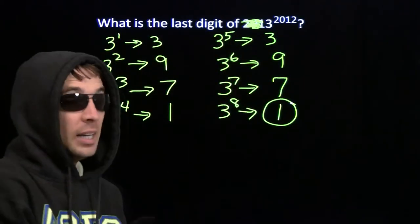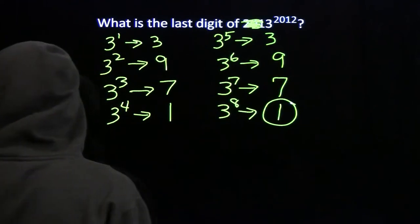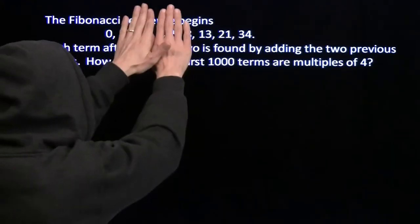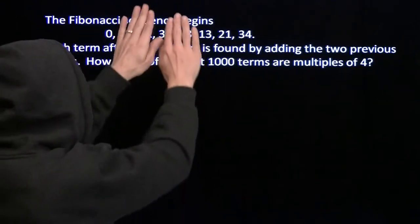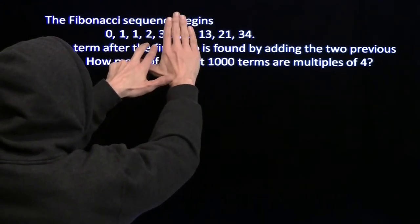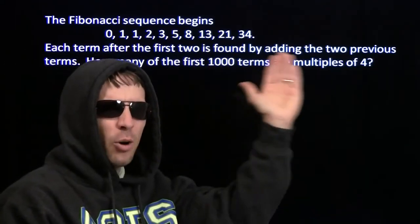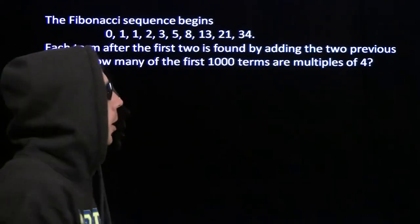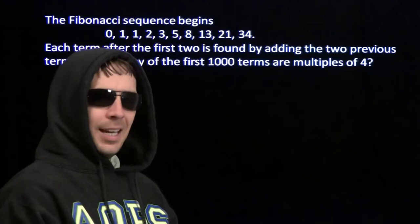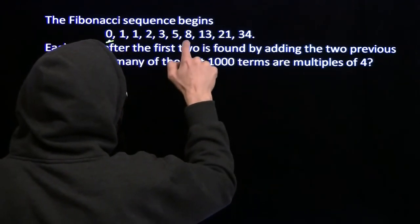We discovered another great strategy: find a pattern. But it wasn't enough just to find a pattern — we had to make sure the pattern really worked and figured out why it was true. Now let's try these two strategies on this problem. We've got the Fibonacci sequence. We start with 0, 1, and each term after that you get by adding the two terms before it: 0 plus 1 is 1, 1 plus 1 is 2, 1 plus 2 is 3, 2 plus 3 is 5, 3 plus 5 is 8. We want to find out how many of the first thousand terms are multiples of 4. I don't see the answer right away, so here we go — can't do something smart? Do something stupid.